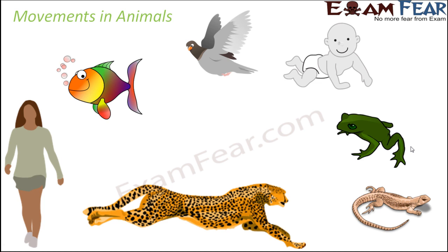Look at the lizard — it doesn't exactly walk or run; it kind of crawls or creeps over the wall. Organisms like snakes, they slither. So different types of organisms, be it animals, insects, birds, snakes, or human beings, they all show different types of movements. Some can move from one place to another, some can fly from one place to another.